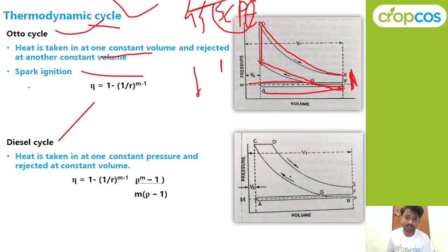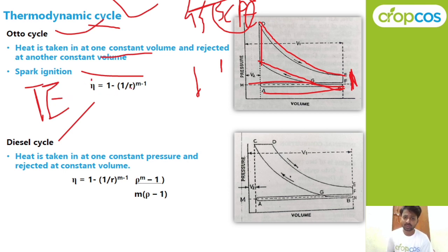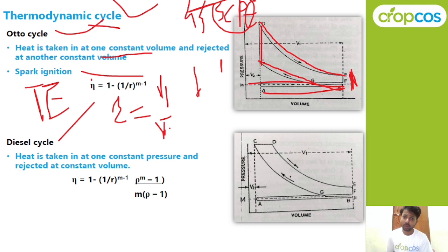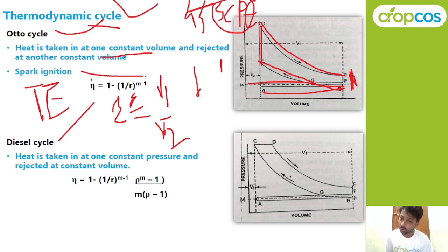The equation for thermal efficiency is: η (eta) = 1 − 1 / R^(γ−1), where R is the compression ratio, equal to V1 divided by V2. When the compression ratio increases, the efficiency increases. Thermal efficiency depends on compression ratio. γ (gamma) is the air constant ratio, denoted as CP divided by CV, where CP is specific heat at constant pressure and CV is specific heat at constant volume. The value of γ for air is 1.4.